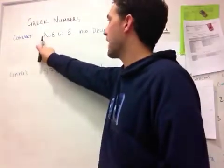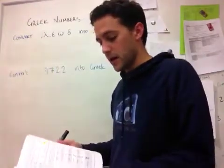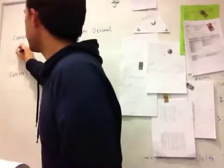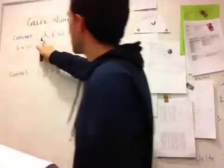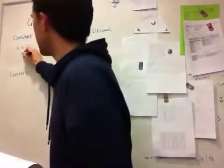The first symbol we have here is a comma and a lambda, and lambda by itself is equal to 30. So this lambda here must be 30,000.